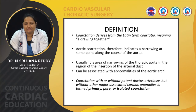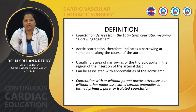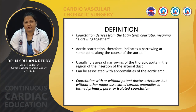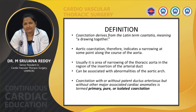Coarctation derives its name from the Latin term 'coarctio,' which actually means drawing in or drawing together. Coarctation of aorta indicates a narrowing at some part along the course of the aorta, and it is an area of narrowing of the thoracic aorta usually at the region of insertion of the ductus arteriosus.